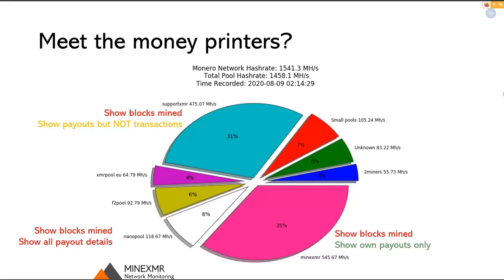Most pools show the blocks they mine. I looked up Support XMR, Mine XMR, and Nano Pool as the largest. Mine XMR also shows blocks mined, as does Nano Pool. Some also reveal information about transactions made to users, allowing outsiders to form a list of all outputs the pool has controlled. Nano Pool shows all payout details — the specific miners, how payments are made, and the exact Monero transactions sent to users. Mine XMR only shows payouts if you enter your mining address first, making it more difficult to track.